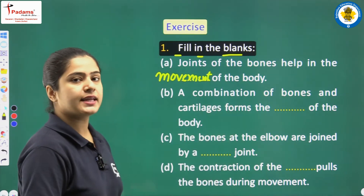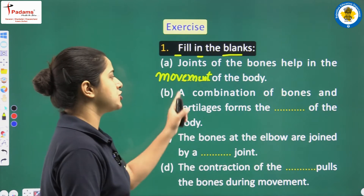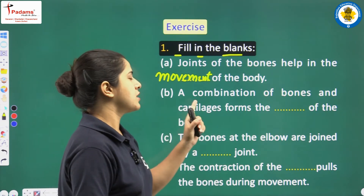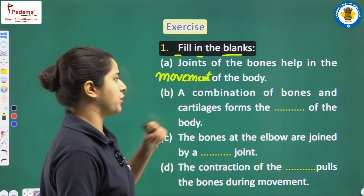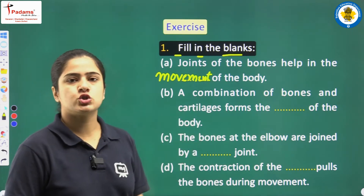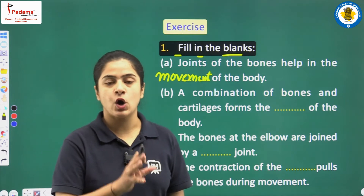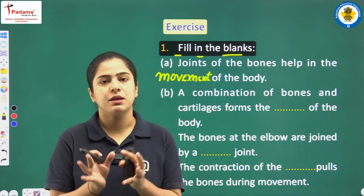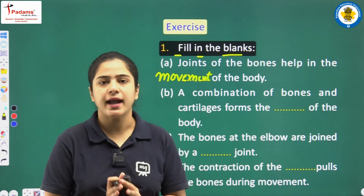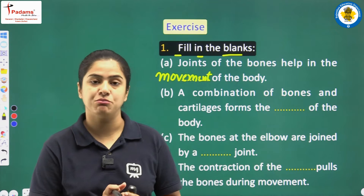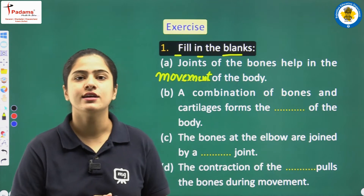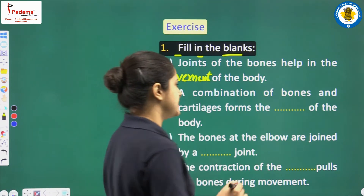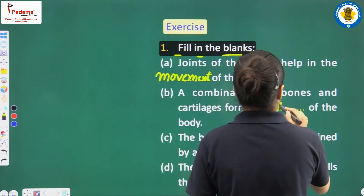The second fill-in-the-blank: a combination of bones and cartilage forms the blank of the body. If bones and cartilage combine together in our body, what is formed? Our body's skeleton is formed. So students, the answer is skeleton.